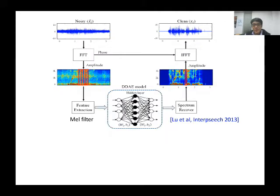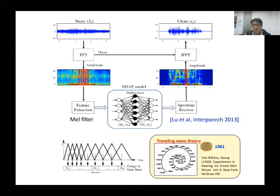This is a very early speech enhancement system. We have paired noisy and clean speech data. We apply short-time Fourier transform to obtain amplitude and phase information, then apply a log operation and Mel filterbanks to get f-bank features. We use a neural network model to convert noisy f-bank features to clean f-bank features. Then we use the phase of the noisy speech to restore the enhanced speech waveform.